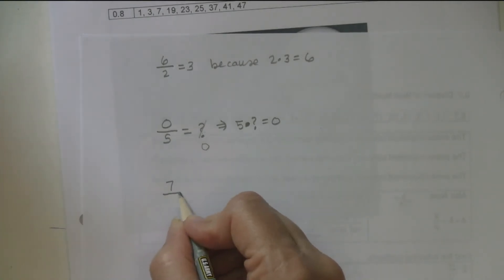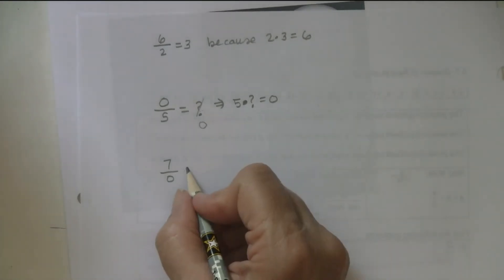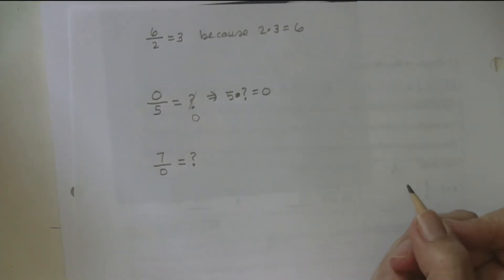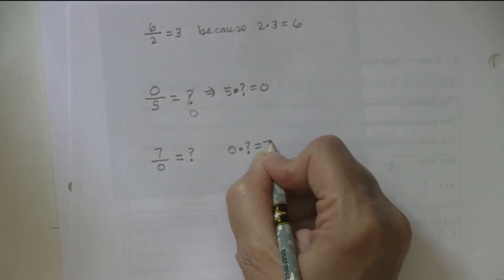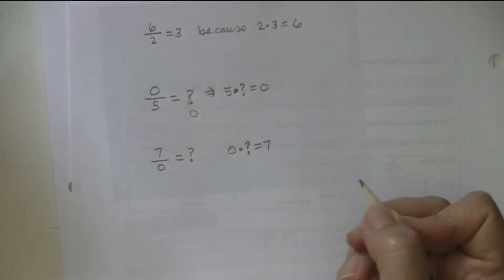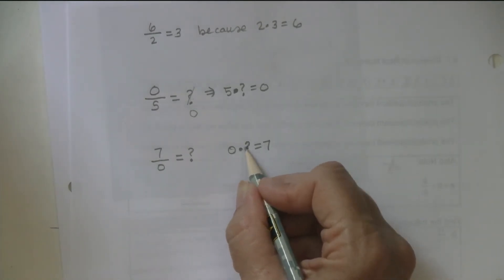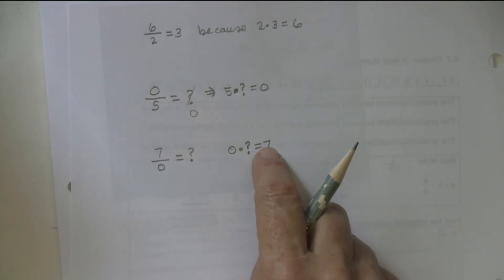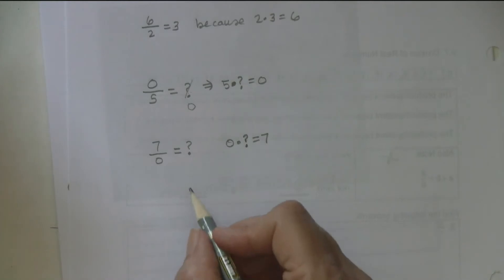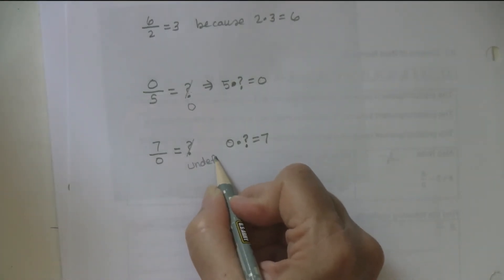Let's say I had seven divided by zero. Why is that undefined? Using the same idea, that would mean zero times the question mark equals seven. When you multiply zero times any number, you always get zero back — none of them give seven. That is the reason we say this is undefined. The vocabulary that goes with division by zero is 'undefined.'